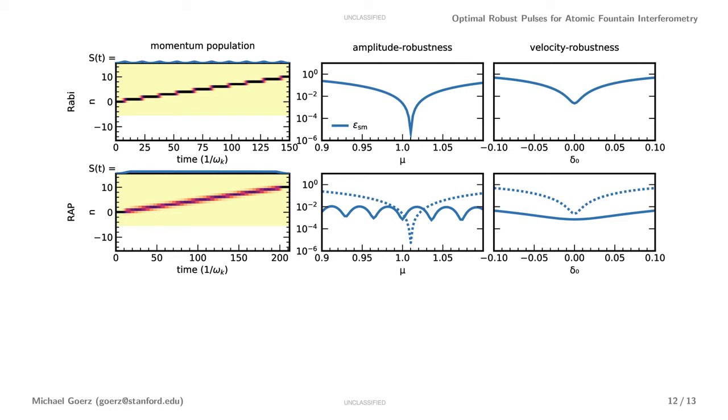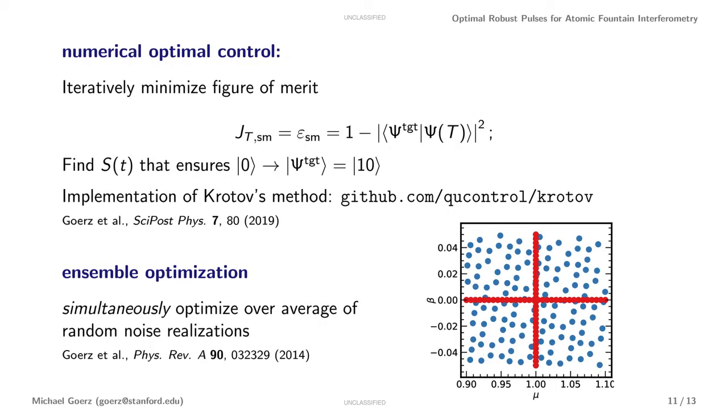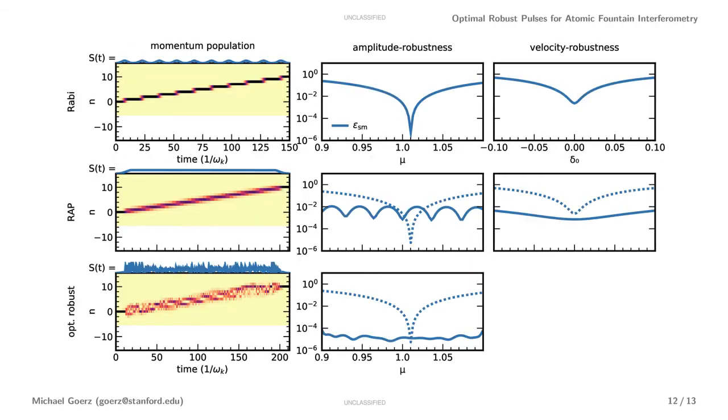So now we can look at optimal control. First, we'll optimize over an ensemble of variations of pulse amplitude. We find that we can make the dynamics completely robust with respect to these variations and lower the error by several orders of magnitude. The price we pay is that we add considerable complexity to the pulse shape and to the momentum space dynamics, although nothing too crazy.